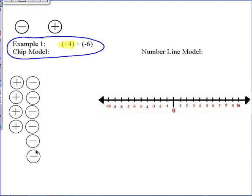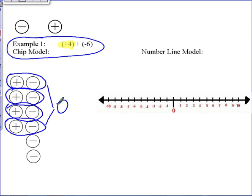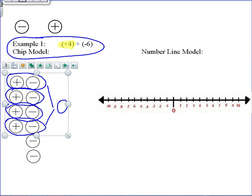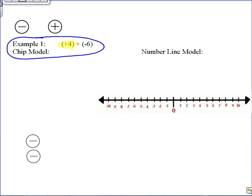Now hopefully you have noticed that we have some zero pairs. You talked about these last year and we in fact reviewed them yesterday. What is the value of these four zero pairs? If you said that they all represent zero, you would be correct. Since they represent zero, we can take them and remove them from our chipboard. And what is left is our end result or our sum of negative 2.